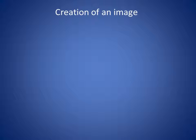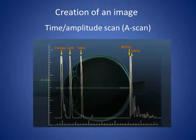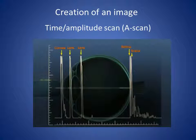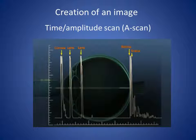Each layer of tissue in the body produces a separate reflection of the ultrasound signal. In the original type of scanner, these reflections were simply displayed on the screen of a cathode ray oscilloscope. This results in a trace where the x-axis represents time and the y-axis represents the amplitude of the reflection — that is, how strongly the sound is reflected. Each layer producing a reflection shows up as a peak on the trace, giving rise to the name of the technique: an amplitude, or A-scan.